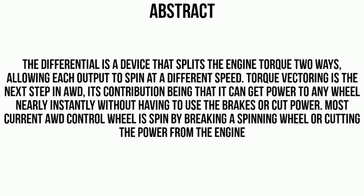Torque vectoring is the next step in AWD. It can deliver more power to any wheel instantly without having to use brakes or cut off power. Most current AWD systems control wheel spin by braking the spinning wheels or cutting the power from the engine.